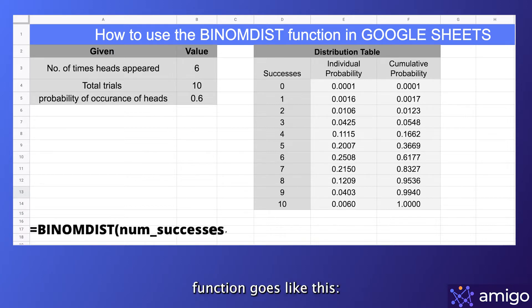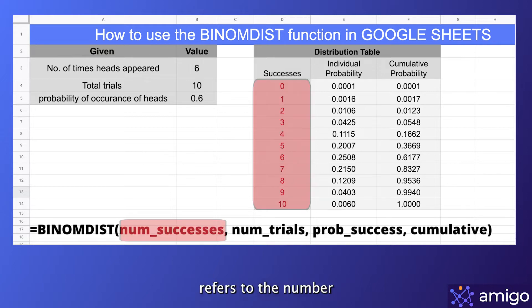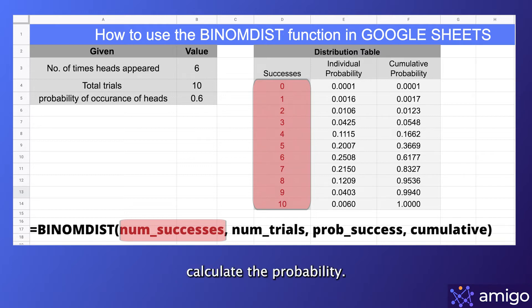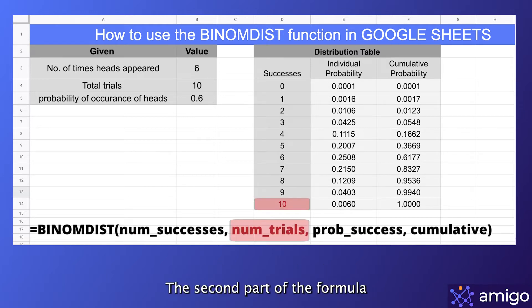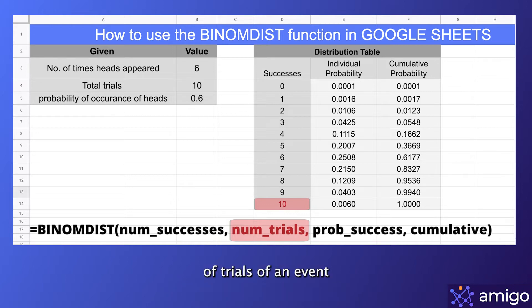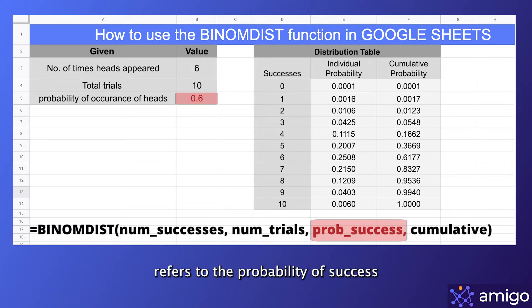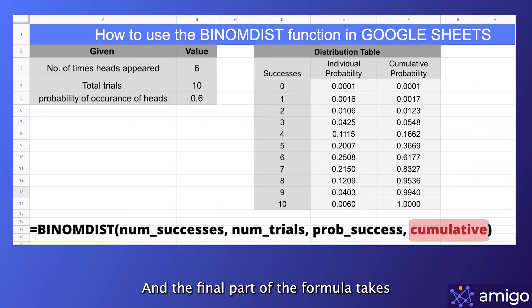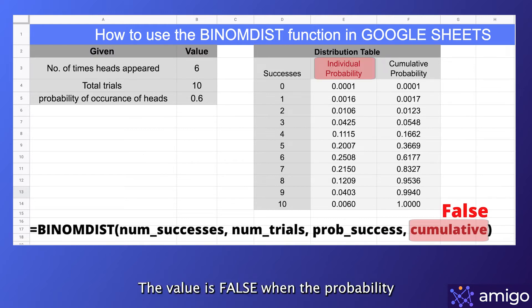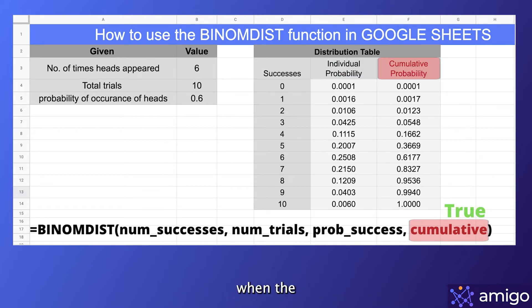The syntax of the BINOMDIST function goes like this. The first part of the formula refers to the number of successful trials for which we want to calculate the probability. The second part refers to the total number of trials. The third part refers to the probability of success. And the final part takes Boolean values of true or false — false when the probability of an individual event is to be calculated, and true when the cumulative sum of probabilities needs to be calculated.